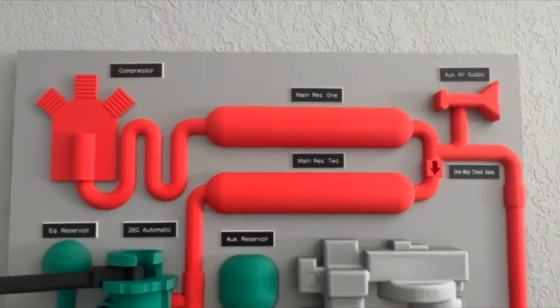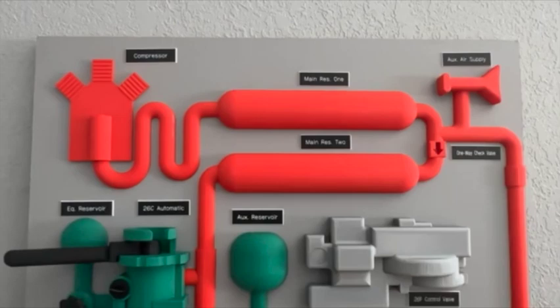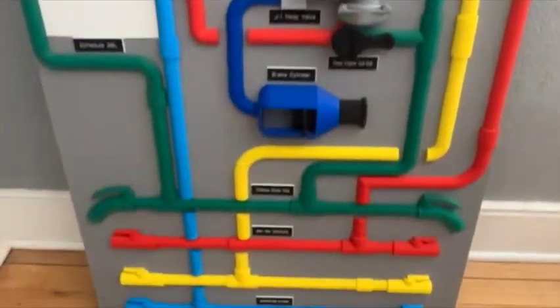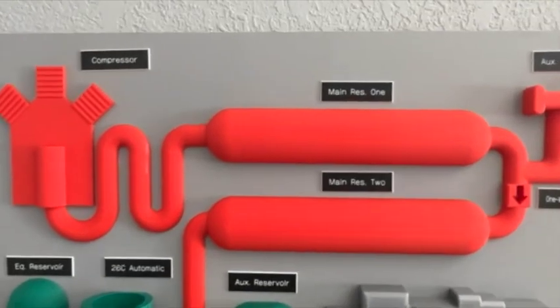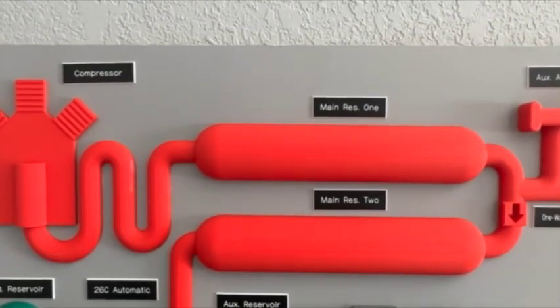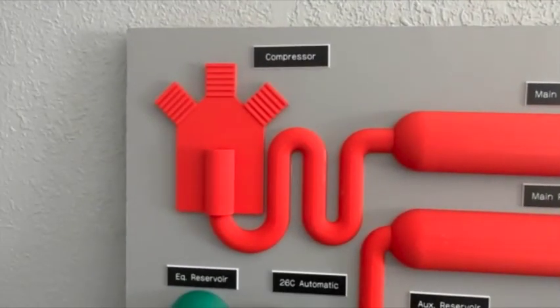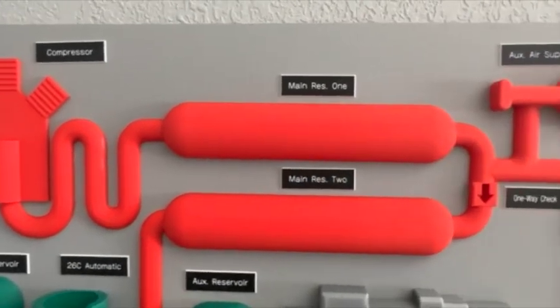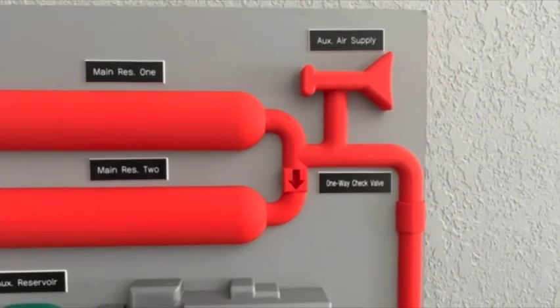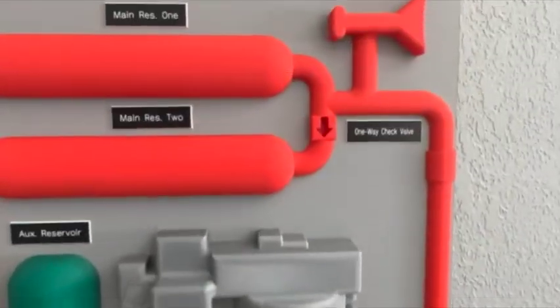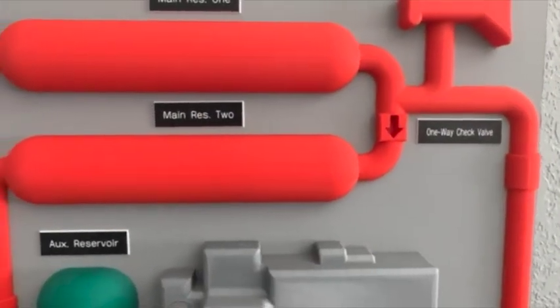All right, just want to talk about the 26L air brake rack. This basically shows the basic functions of a 26L system. Starting at the compressor, it flows into main reservoir one. From main reservoir one, the line comes out for the auxiliary air supply along with the line that goes down to the MU. There's a one-way check valve.